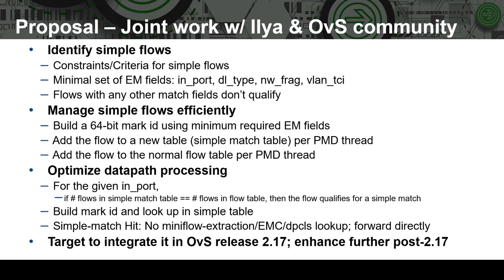For this, we check if the ingress port on which the packet is received has any additional flows in the regular flow table. If the number of flows in the simple match table and the flow table are equal, then we don't have any other flows for the given ingress port, and so this flow can be looked up in the simple match table. We build a 64-bit mark ID using the implicit exact match fields mentioned earlier. If there is a hit in the simple match table, we can avoid further lookup processing in the datapath like miniflow extraction, EMC/SMC lookup, etc. This gives us performance gains for traffic to and from the virtual device in the VM. This enhancement is currently being targeted for OVS release 2.17.